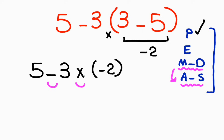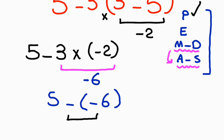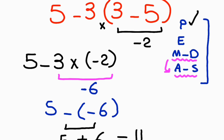So we have to solve this multiplication first, not the subtraction. 3 times negative 2 gives us negative 6. At the end we have 5 minus negative 6. Now we have two negatives, so negative times negative equals positive, and 5 plus 6 equals 11.